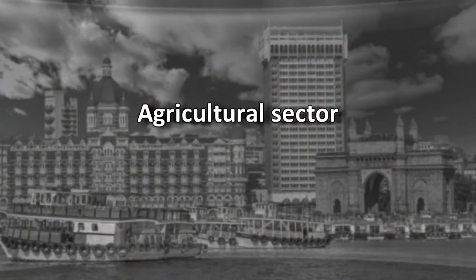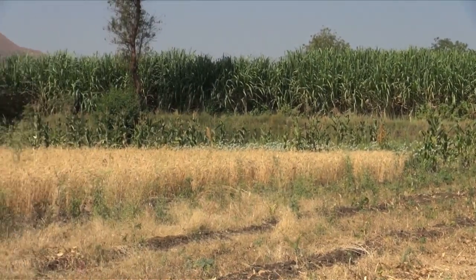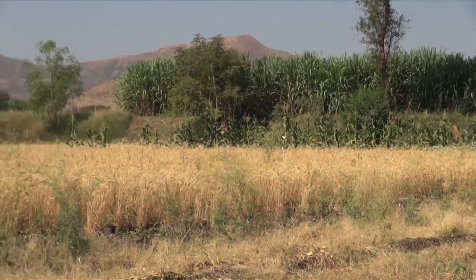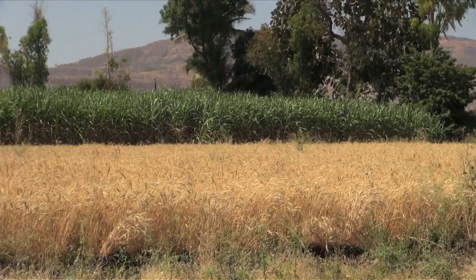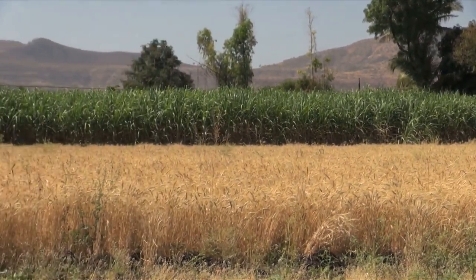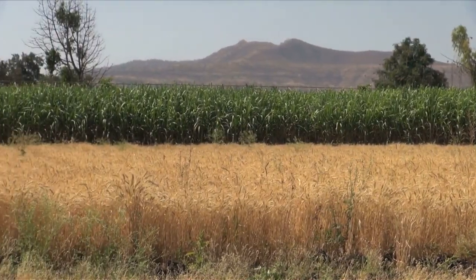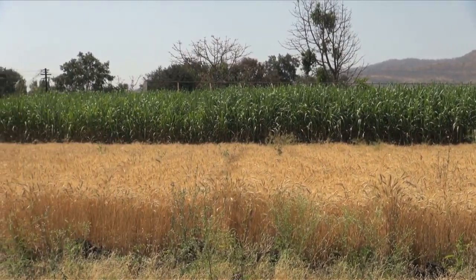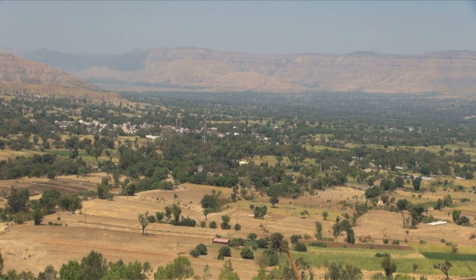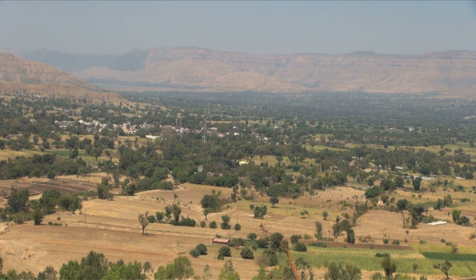According to 2014 surveys, India was placed second in agricultural productivity with around 49% of people employed in that sector. Although Indian agriculture declined until 2011, the Green Revolution played a major part in improving irrigation, technology, adoption of modern agricultural tools and equipment, and provision of various agricultural subsidies. International reports clarify that Indian agriculture contributes 30% to 50% of total agricultural production in the world.